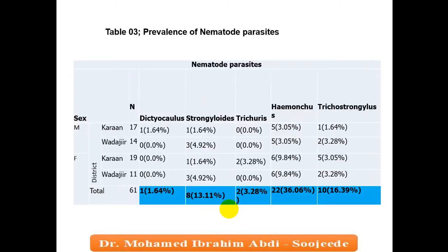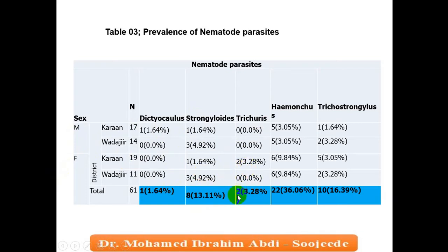Under the nematoda category: Bunostomum (lungworm in sheep and goats) had only one sample. Strongyloides had more — six in each district, with percentages of 1.64% and 18.11%. Trichuris was found only in Karan with two samples, 3.28%. Haemonchus had 22%, the highest among nematodes.